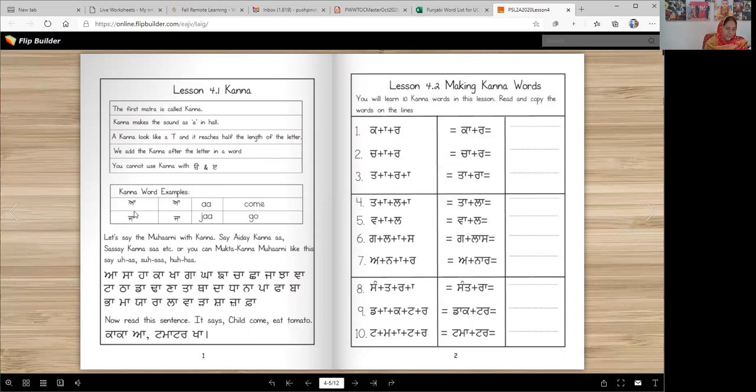Kanna word examples. Ada Kanna makes Aa, which means come. Ja means go, and sometimes we use both words at the same time. Aja means come on.